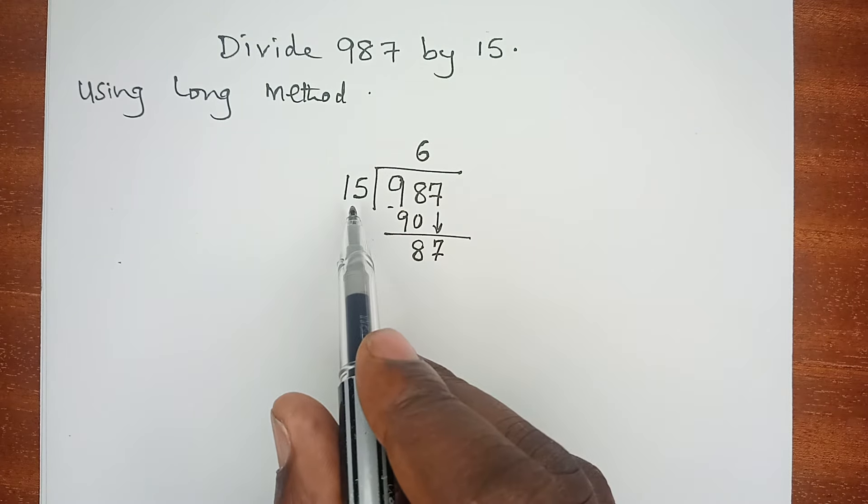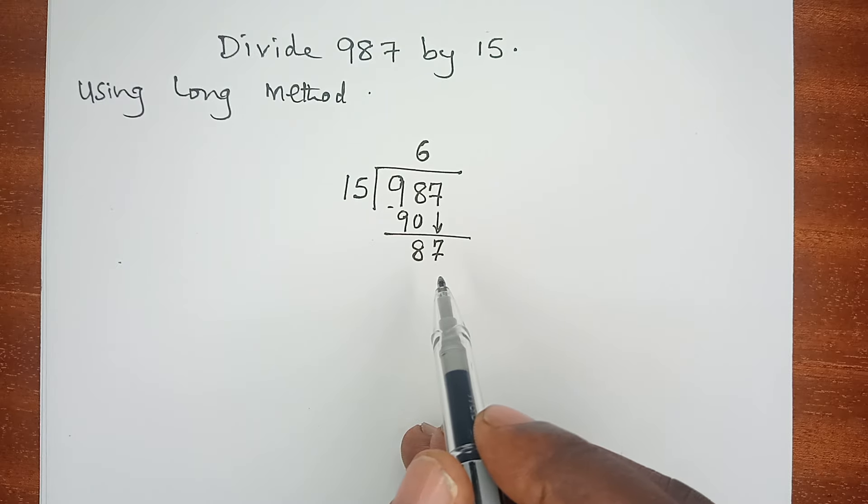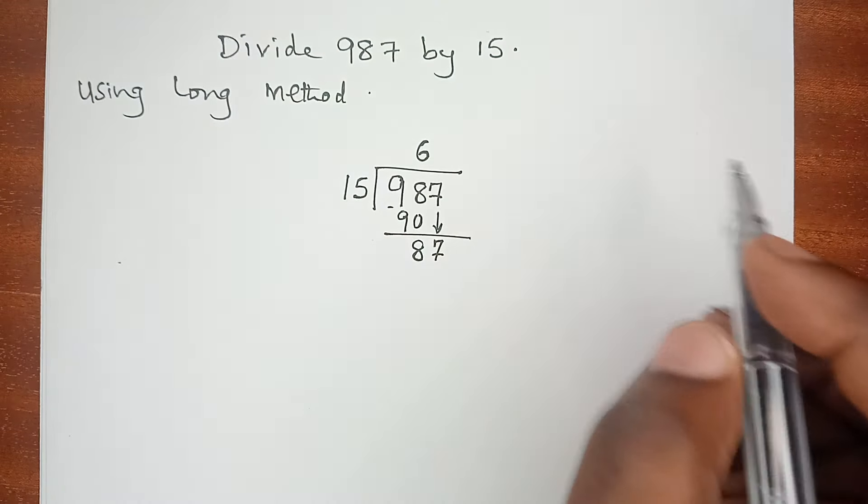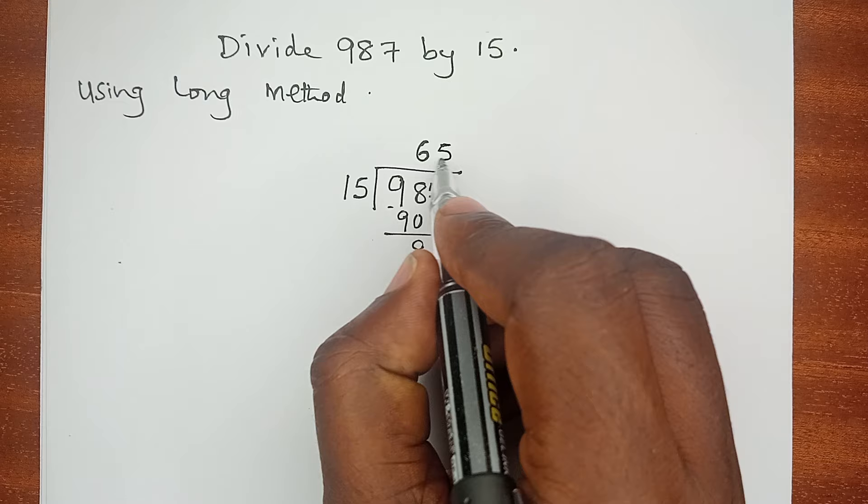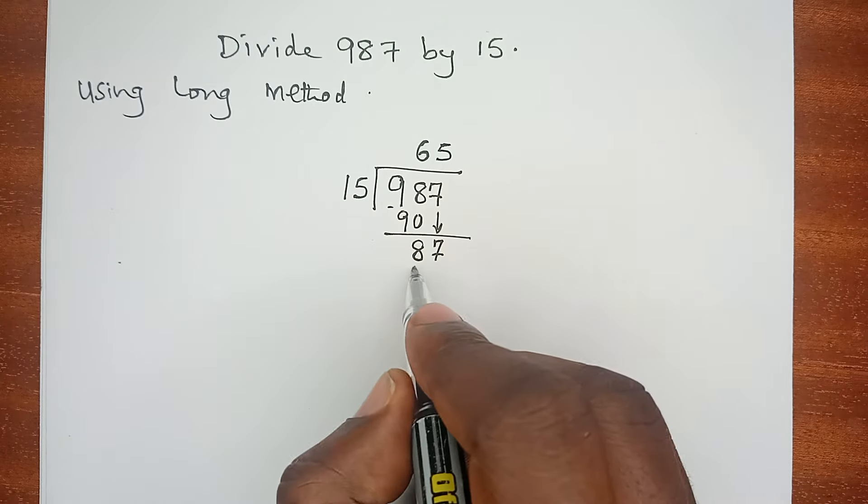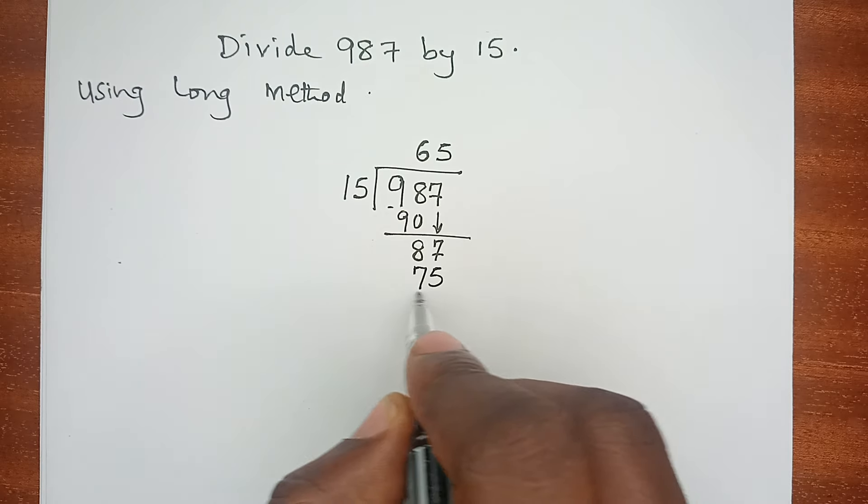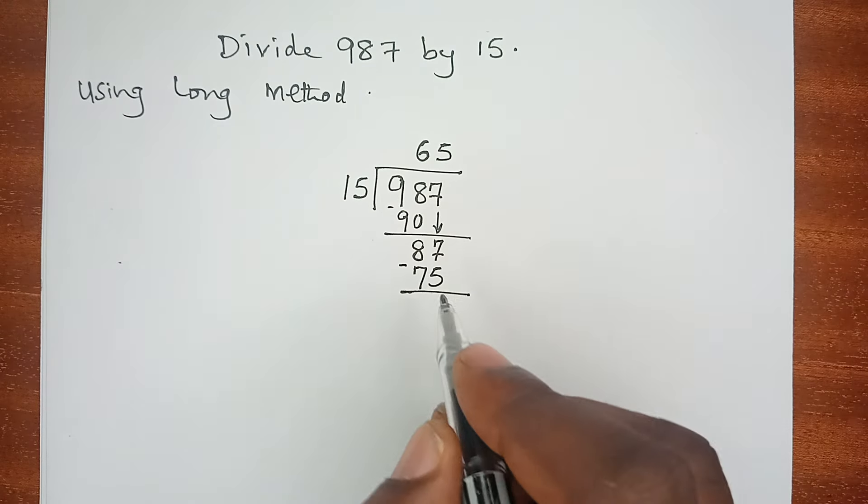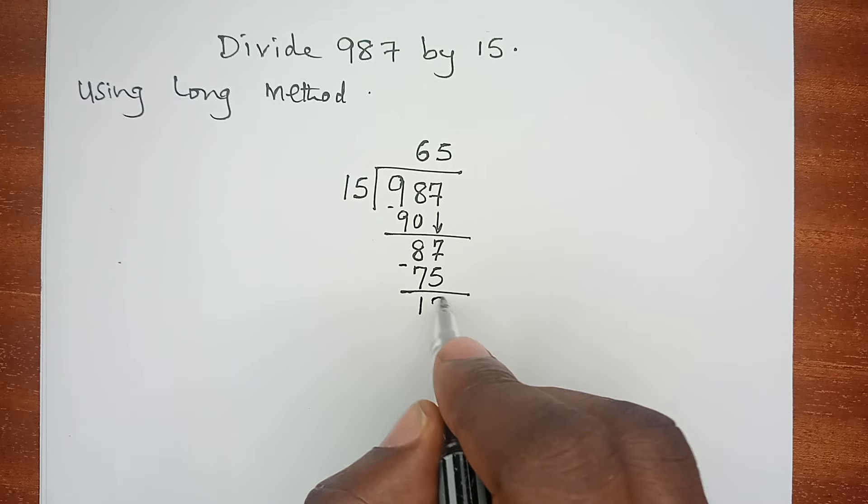How many times can 15 go into 87? This is 5 times because 15 times 5 is 75. And the subtraction gives us 12.